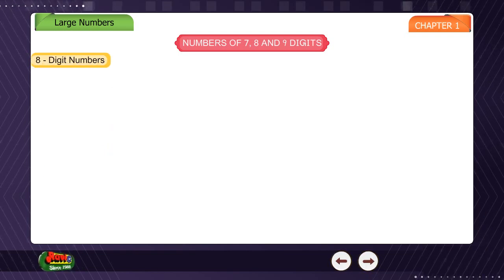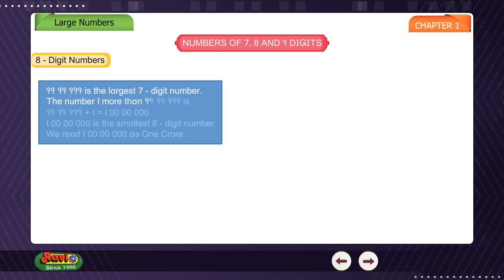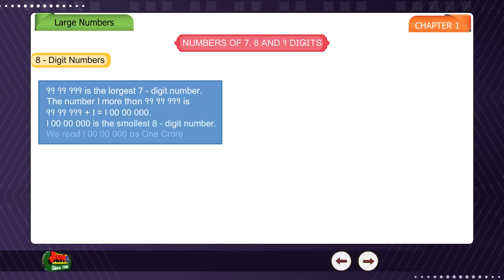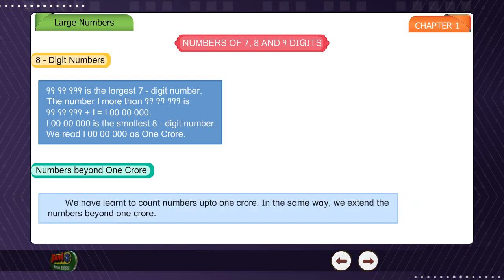8-digit numbers: 99,99,999 is the largest 7-digit number. The number 1 more than 99,99,999 is 99,99,999 + 1 = 1 crore. 1 crore is the smallest 8-digit number, read as 1 crore. Numbers beyond 1 crore: we have learnt to count numbers up to 1 crore. In the same way we extend the numbers beyond 1 crore.